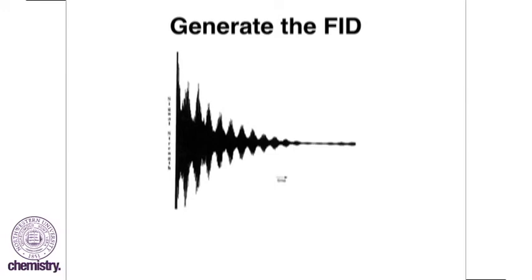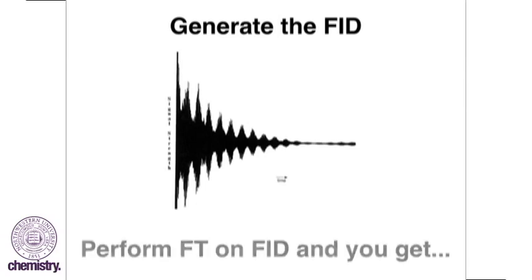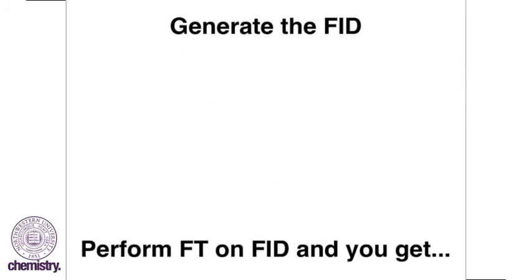That's where the Fourier transform comes in. If we perform a Fourier transform on our raw data, then the Fourier transform converts our time domain to a frequency domain.